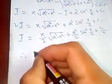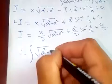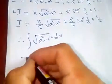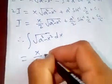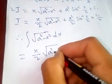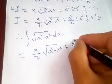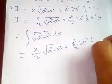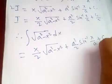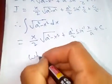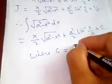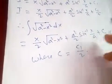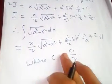Therefore, the integral of √(a² - x²) dx = (x/2)√(a² - x²) + (a²/2)·sin⁻¹(x/a) + C, where C = C₁/2. This is our final answer.